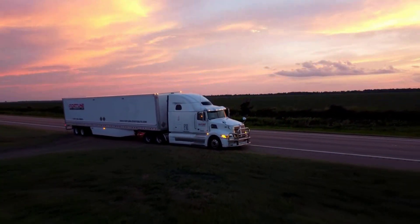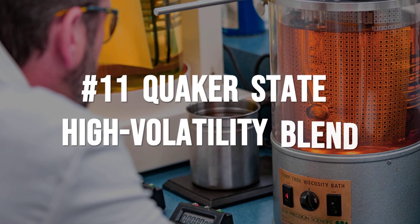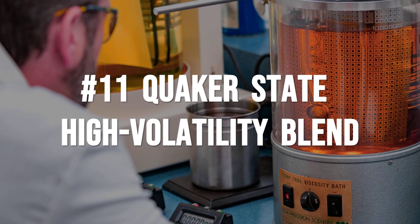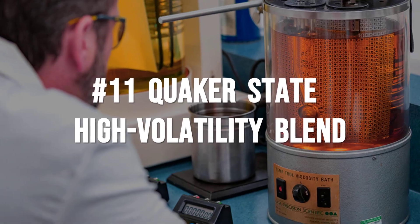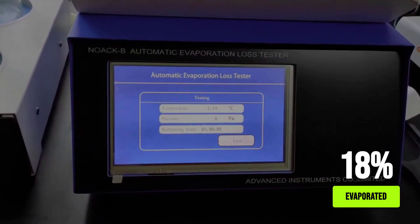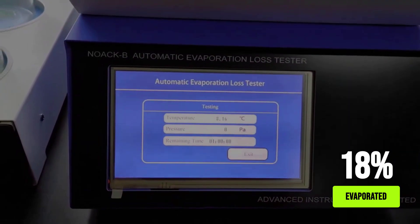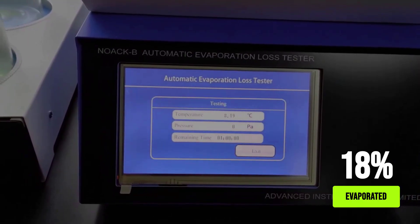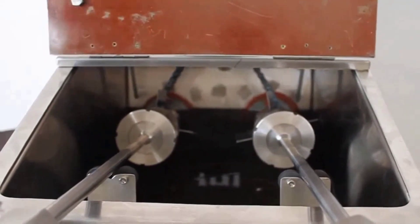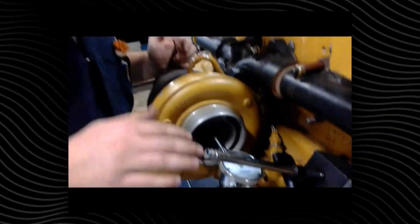Quaker State's synthetic blend lands at number 11 for a reason that matters to budget conscious drivers: high volatility. In independent Noack bench tests, this oil lost between 15 and 18 percent of its weight when heated to 250 degrees Celsius, a rate far above what is considered safe for modern engines.